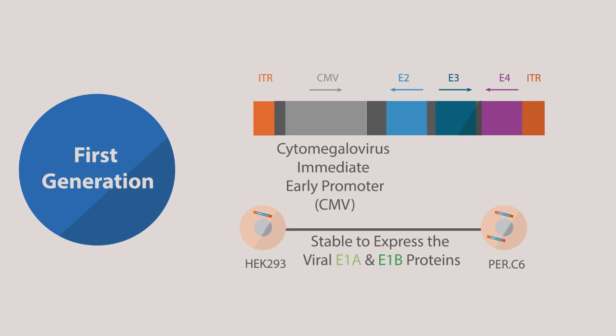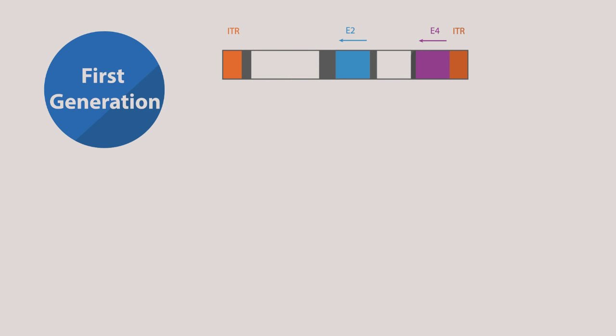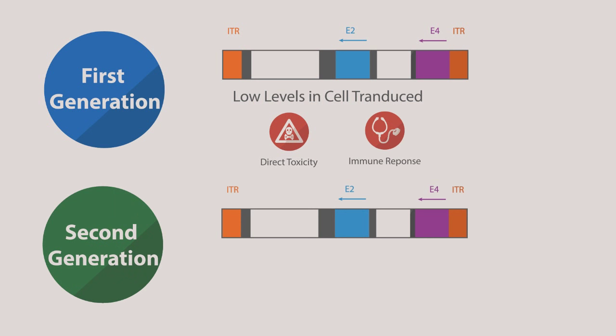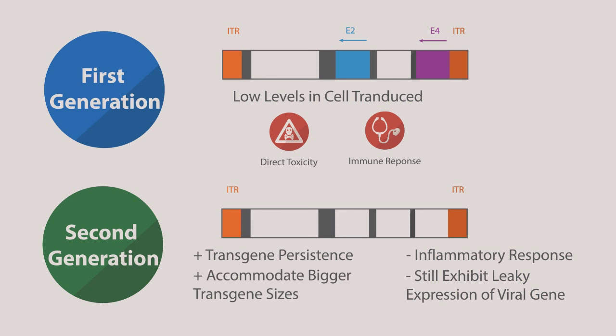Both cell lines are stable enough to express the viral E1A and E1B proteins. Despite the E1 and E3 deletion, there is evidence that viral genes are still expressed at low levels in cells transduced with first generation vectors, which can cause direct toxicity and immune response in vivo. The second generation vectors are constructed with additional deletions of E2 or E4 function, which improved transgene persistence and decreased inflammatory response. However, these vectors still exhibit leaky expression of viral genes, though they can accommodate bigger transgene sizes.